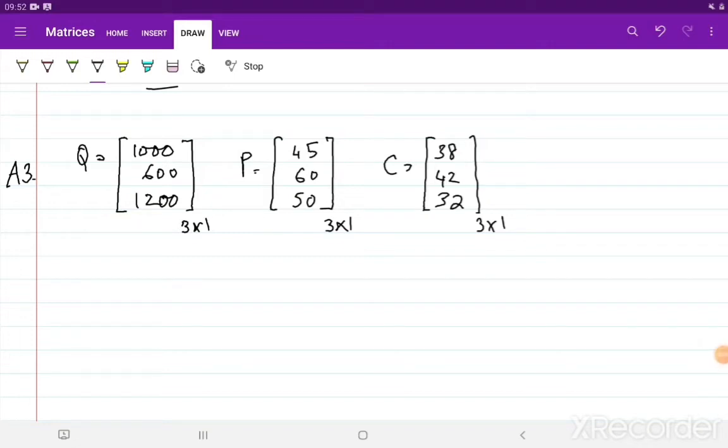Now, in the third question we have three column matrices. Q corresponds to quantity, P corresponds to the price per unit, and C corresponds to costs per unit. The three items that we are talking about are hamburgers, cheeseburgers, and milkshakes.